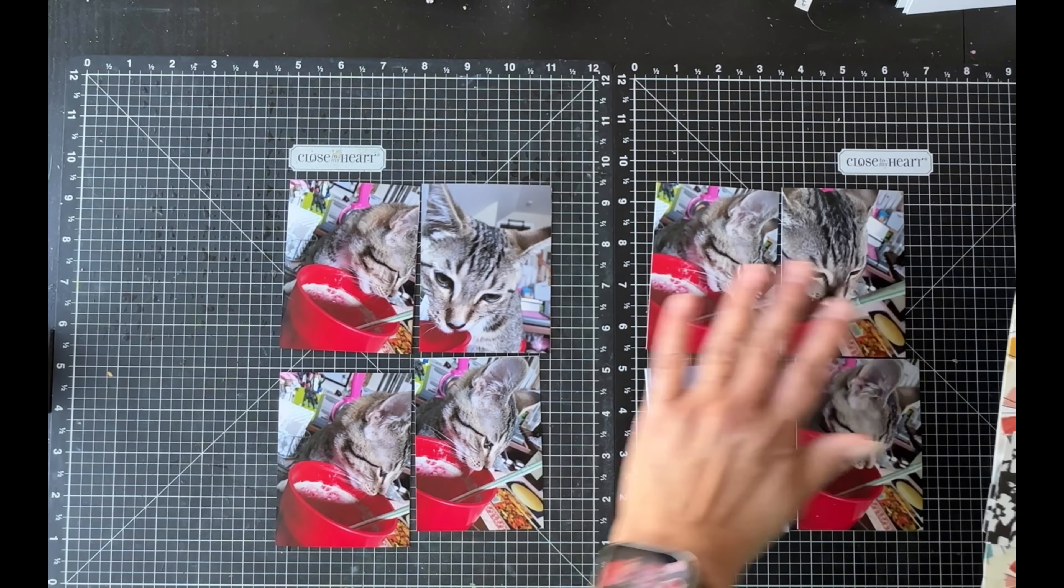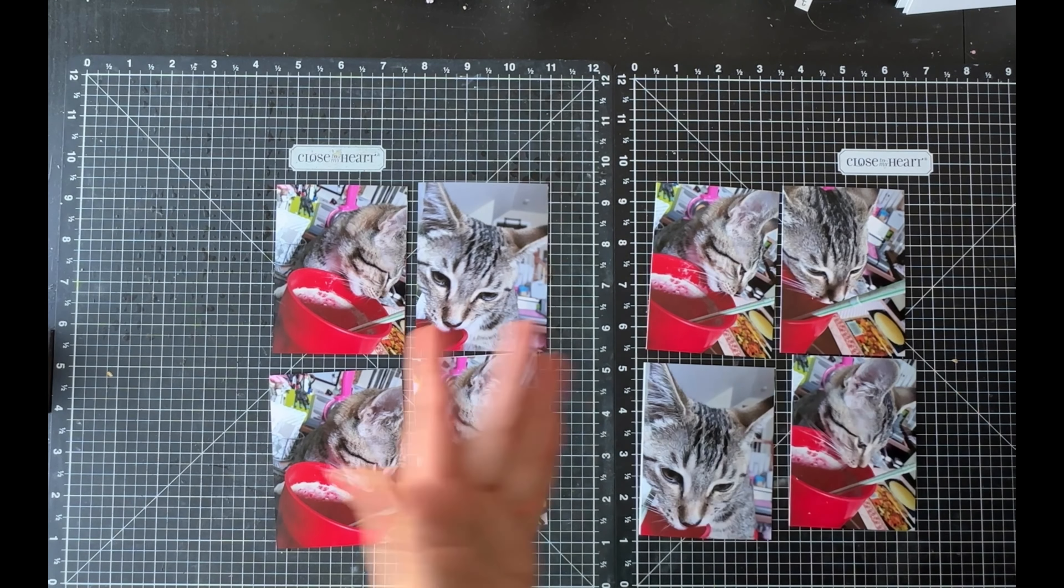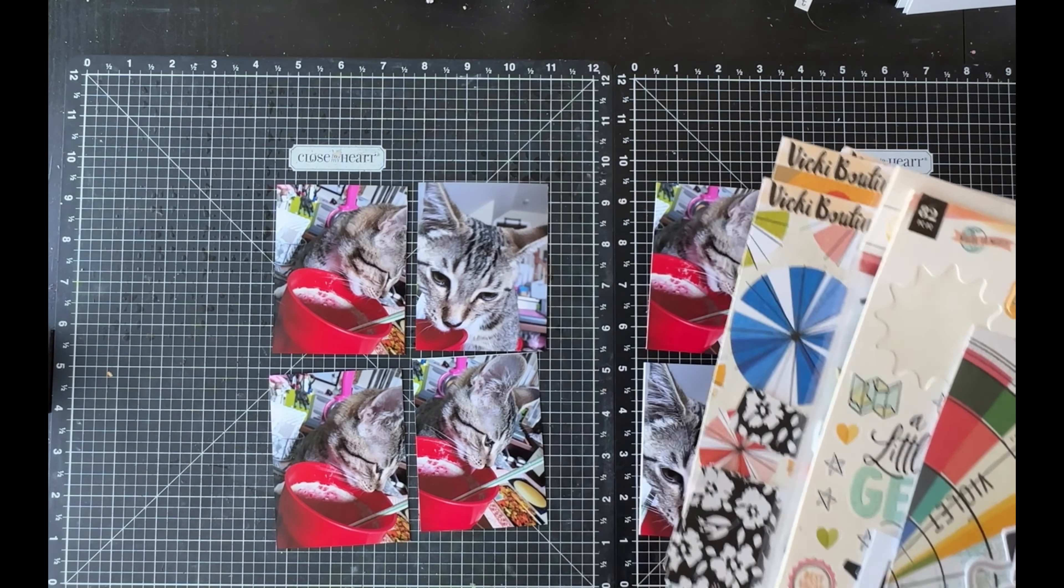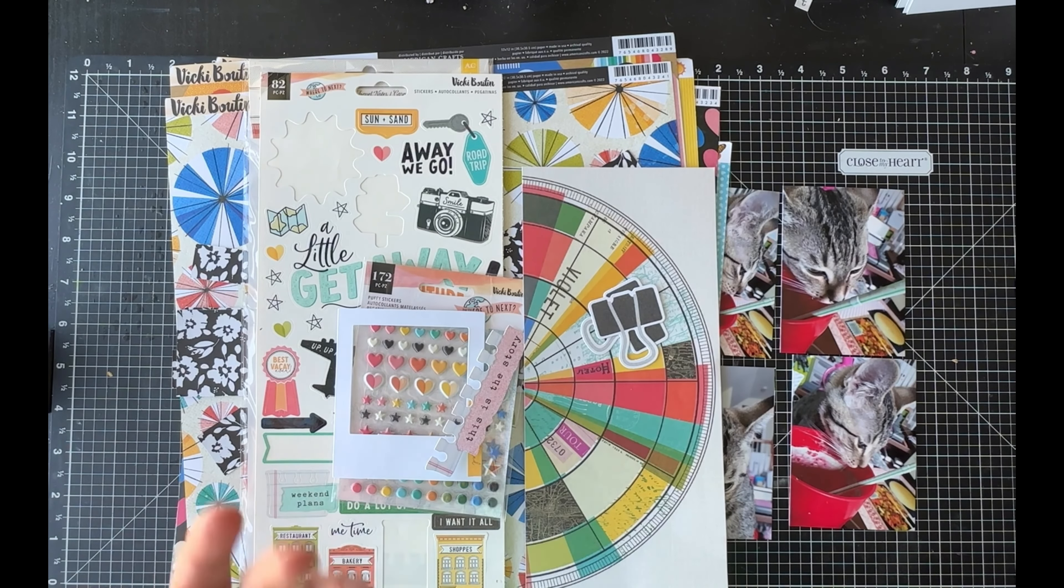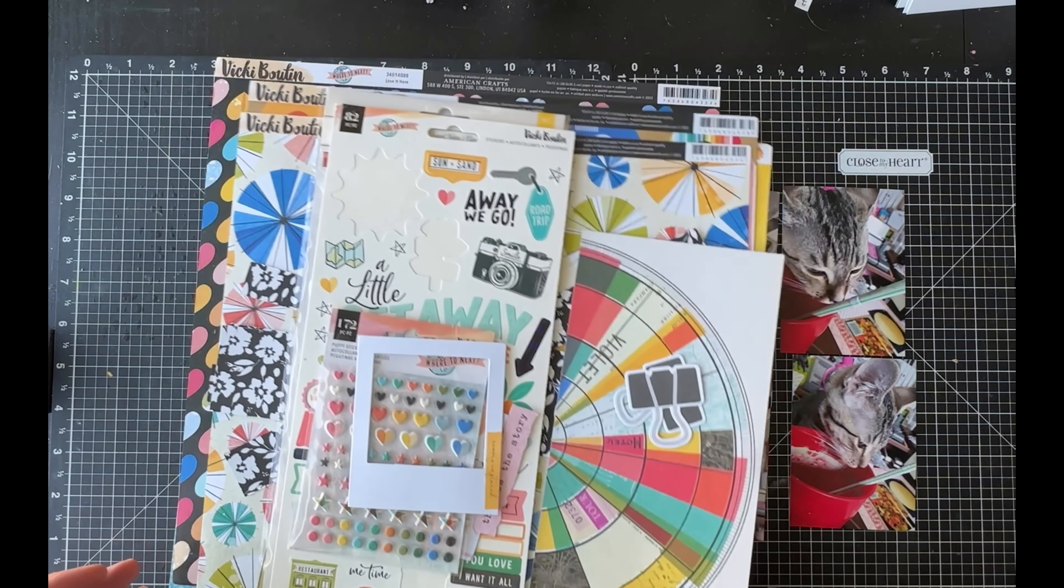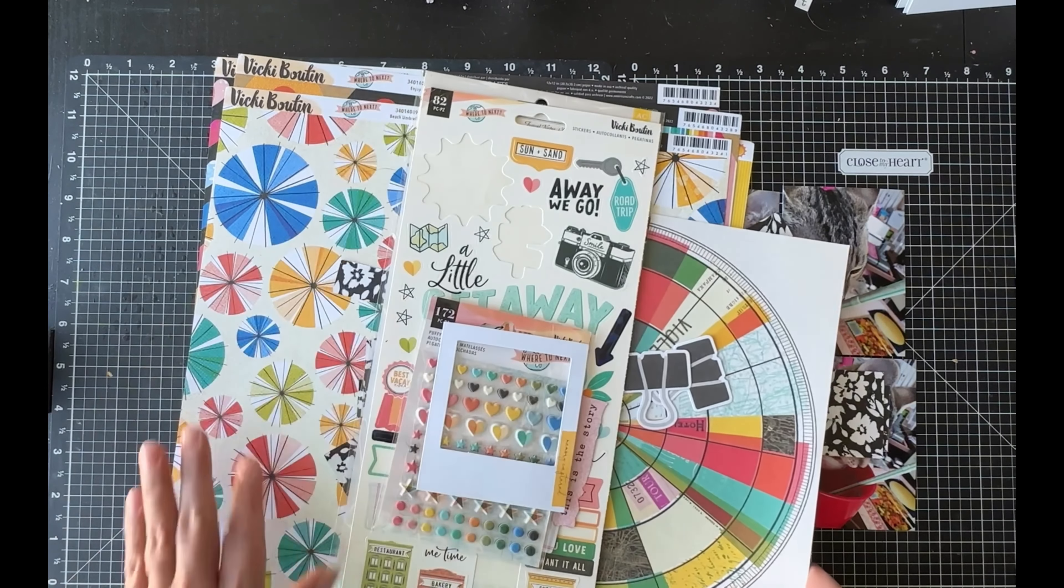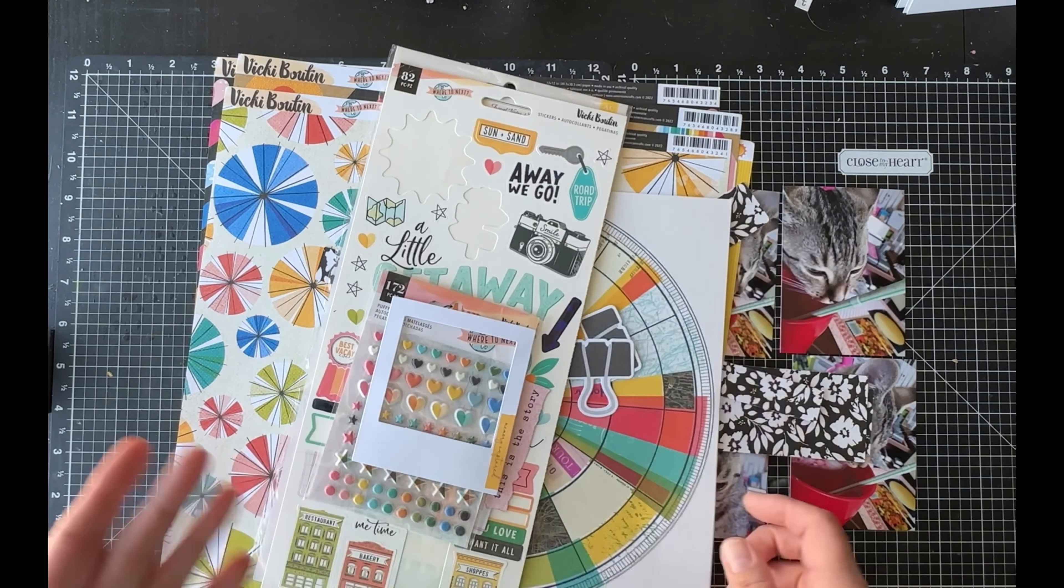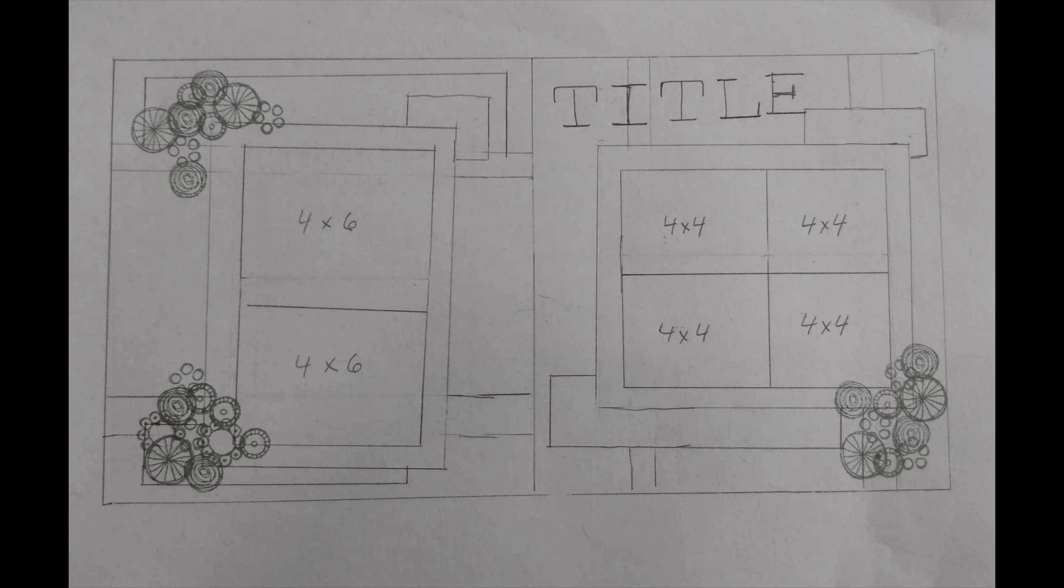I don't have two four by sixes printed, I have eight three by fours in portrait mode, so that means I'm going to be finagling around with this sketch just a little bit. I'm pulling out Vicki Bouten's Where to Next collection. The circles on the sketch reminded me of these umbrella tops. I still haven't used a whole lot of this collection, so it'll be nice to dig into some of it and get it used up.